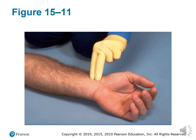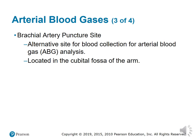The three most frequently used sites for ABG collection are the radial, brachial, and ulnar arteries. The brachial artery is an alternative puncture site located in the antecubital fossa of the arm.